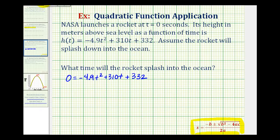So for the first step, we need to recognize that a is equal to -4.9, b is equal to 310, and c is equal to 332. Again, this is based upon the fact that we're using the function h of t equals at² + bt + c.